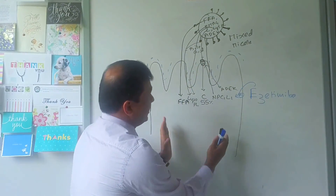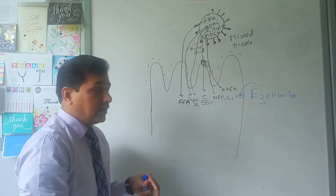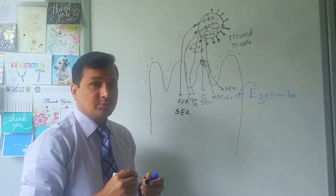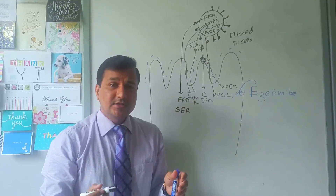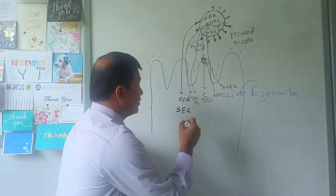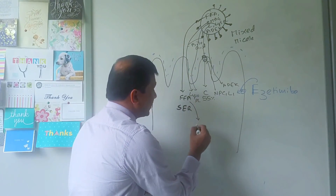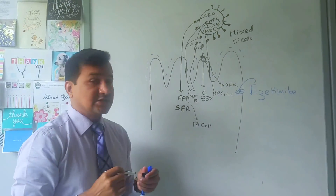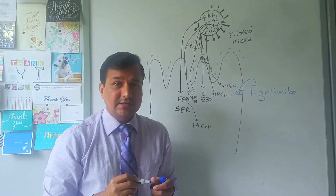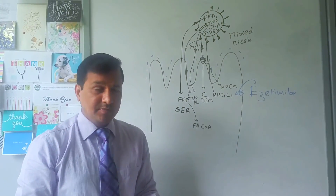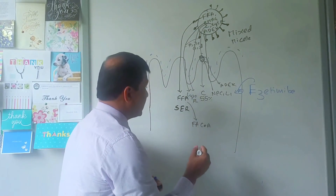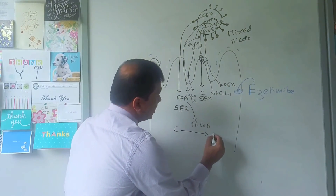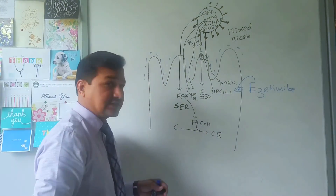Once all these lipids are in the enterocytes, they all go into the smooth endoplasmic reticulum. In the smooth ER, free fatty acids are activated into fatty acyl-CoA by fatty acyl-CoA synthetase enzyme. Activated fatty acyl-CoA can then combine with cholesterol to make cholesterol ester.